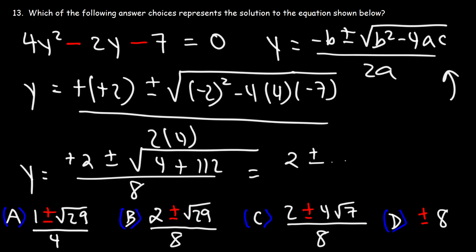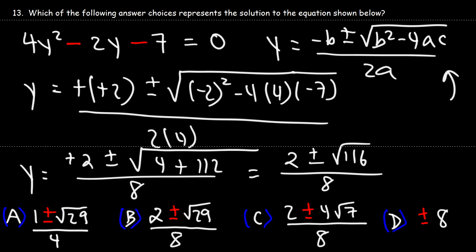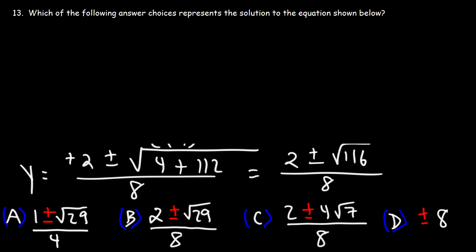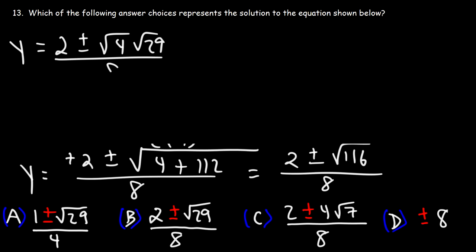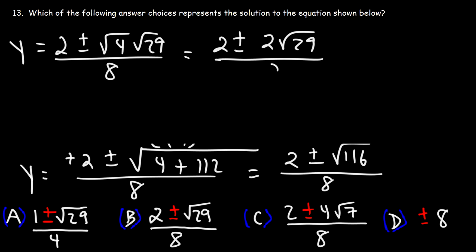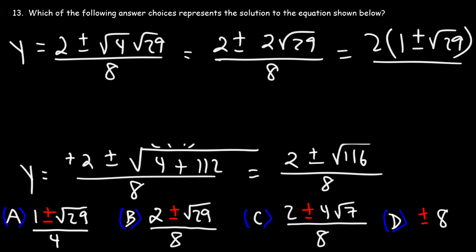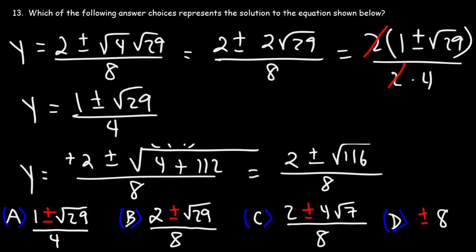Now, 116 is 4 times 29, so the square root of 116 is 2 times the square root of 29. Our expression becomes 2 plus or minus 2 root 29, all over 8. Factoring out a 2 from the numerator gives 2 times the quantity 1 plus or minus root 29, and writing 8 as 2 times 4 lets us cancel the 2. The final answer is 1 plus or minus the square root of 29, all over 4 — so answer choice A is correct.